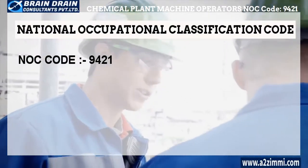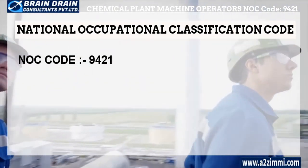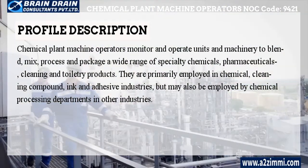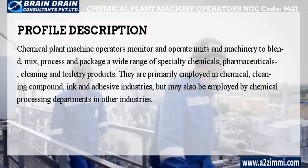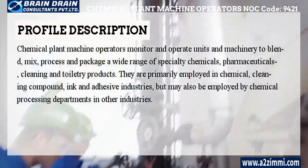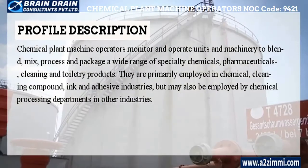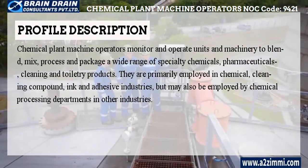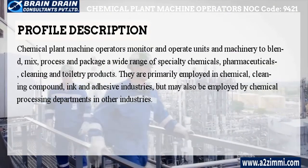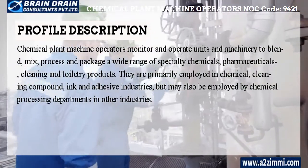The National Occupational Classification Code or NOC code for the profile of chemical plant machine operators is 9421. As per Statistics Canada, chemical plant machine operators monitor and operate units and machinery to blend, mix, process and package a wide range of specialty chemicals, pharmaceuticals, cleaning and toiletry products. They are primarily employed in chemical, cleaning compound, ink, and adhesive industries, but may also be employed by chemical processing departments in other industries.